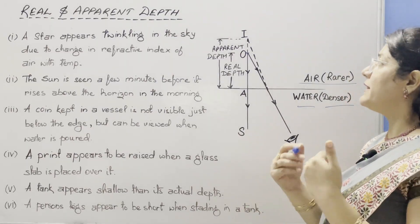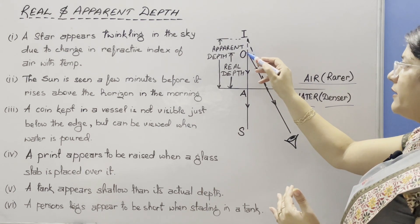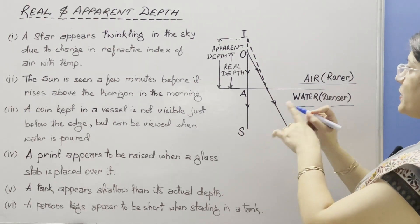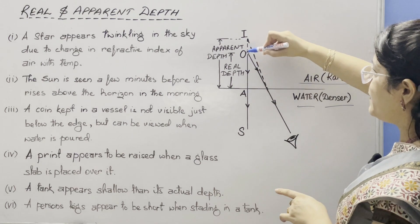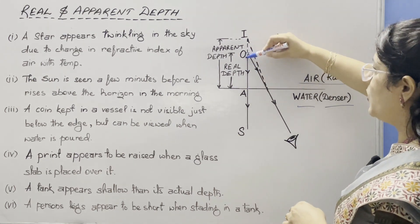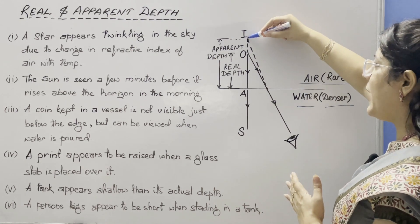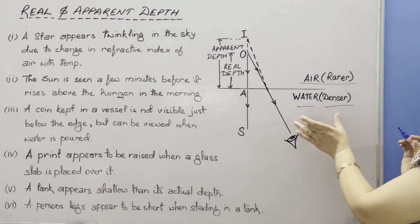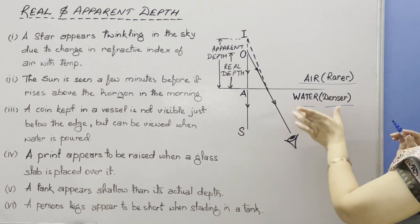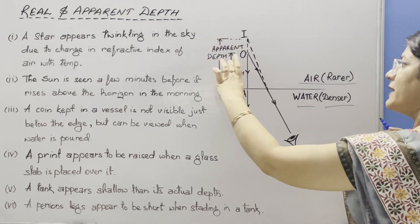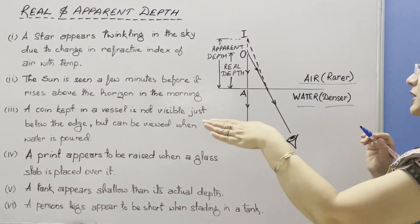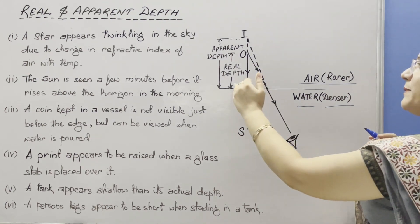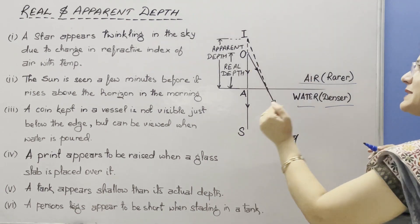Now we are going to discuss the opposite case — when the object is placed in the rarer medium or air and we are viewing this object from the denser medium, water. The actual depth or real depth of this object from the water-air surface is OA, and this object is appearing at point I, so the apparent depth is AI. We are viewing the object from the denser medium and the object is in the rarer medium, so its apparent depth is greater than real depth. Earlier, viewing from the rarer medium with the object in the denser medium, real depth was more than apparent depth. Here, real depth is less than apparent depth.